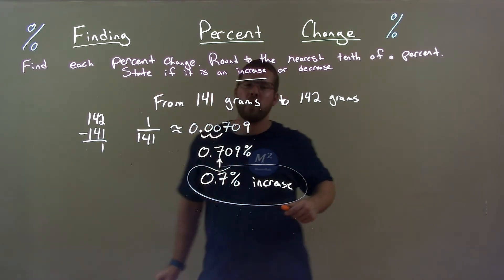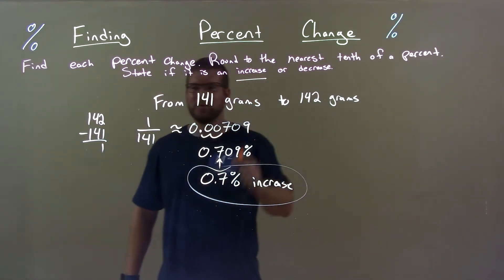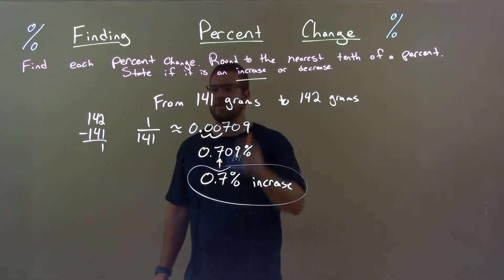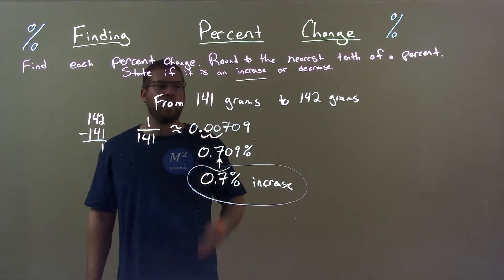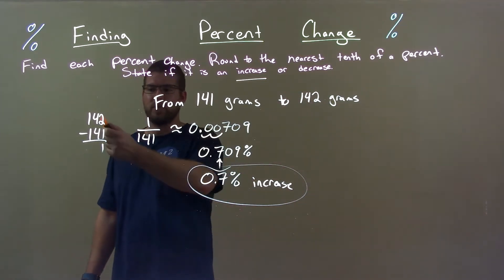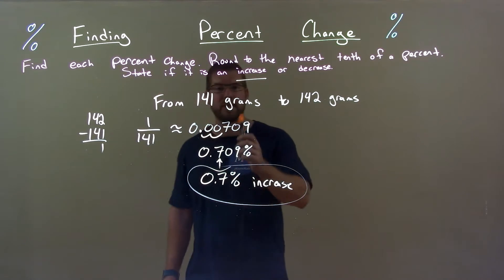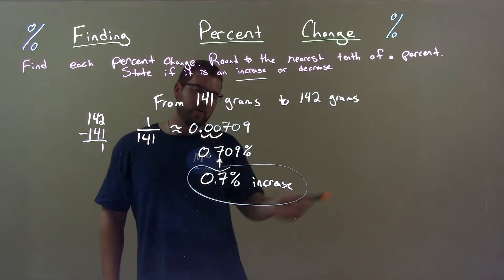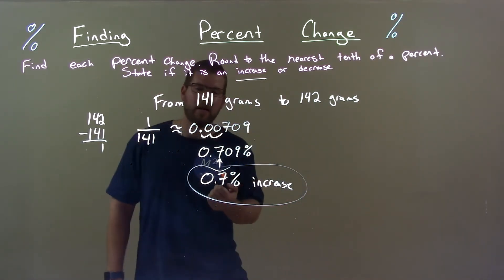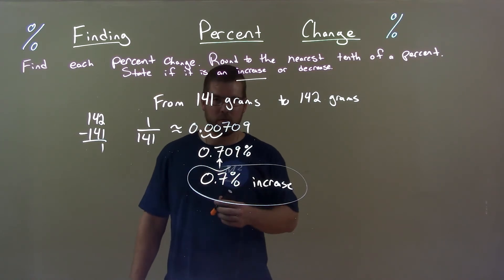Quick recap, we're given 141 grams to 142 grams and we have to find the percent change. We see it's a slight increase. Difference between the two, got a one. One divided by the first number gave me a decimal. Decimal to a percent, percent to a rounded percent. And then our final answer here, 0.7 percent increase.